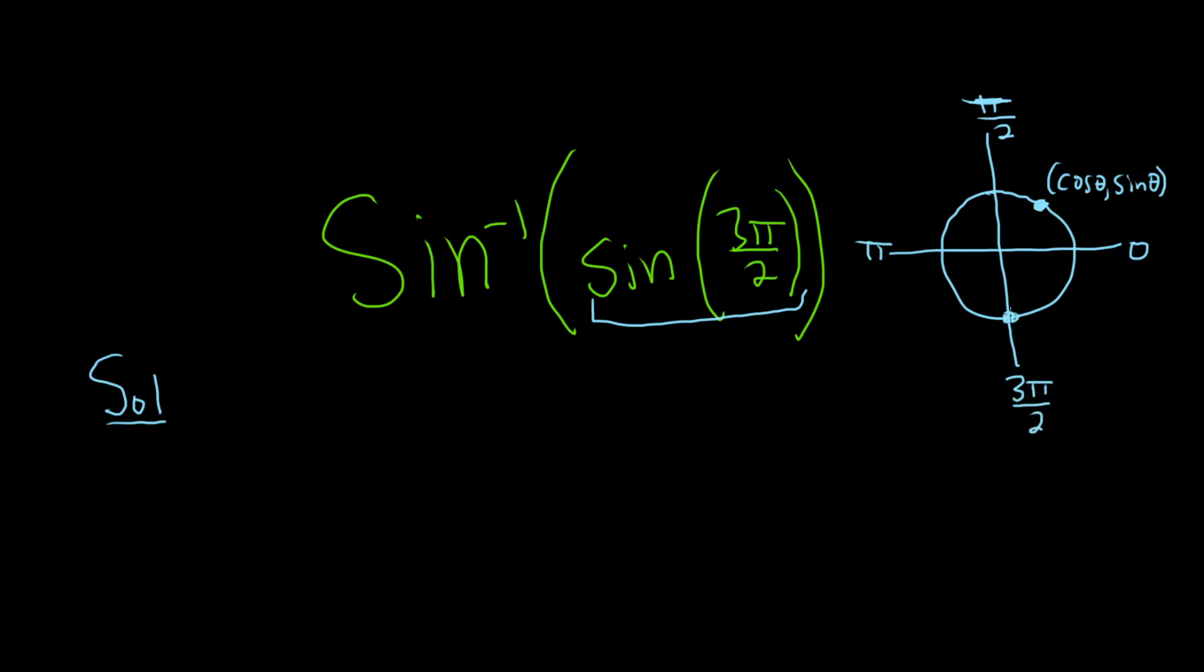Here the ordered pair on the unit circle would be 0, negative 1. So that means that sine of 3π over 2 is negative 1. So we can write this as the sine inverse of negative 1.